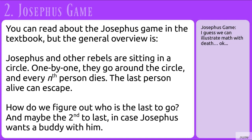Next let's look at the Josephus game. You can read about the Josephus game in the textbook, but the general overview is that Josephus and other rebels are sitting in a circle. One by one, they go around the circle, and every nth person dies. The last person alive can escape. How do we figure out who is the last to go, and maybe who is the second to last to go, in case Josephus wants a buddy with him.